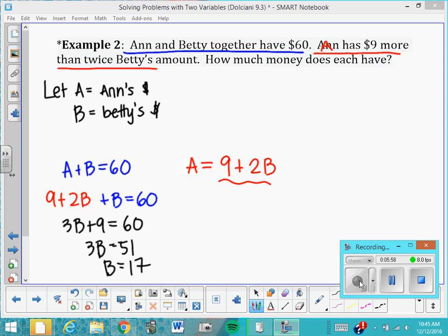Okay, so you can see here I substituted the A in place of A right here in this equation, and I solved down, and I got my B equals 17. So I know that Betty has $17, and that means that Ann has 17 times 2 or 34. 34 plus 9 is $43. And I can add them up and just make sure they add to 60, and that's correct. All right, let's do one more together.